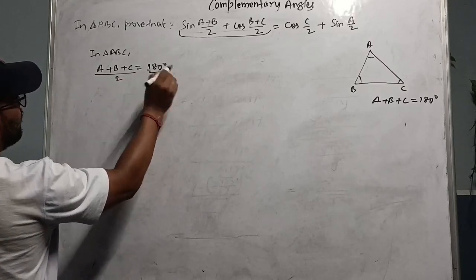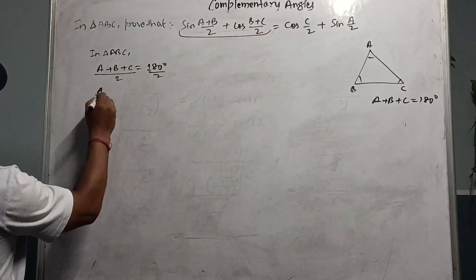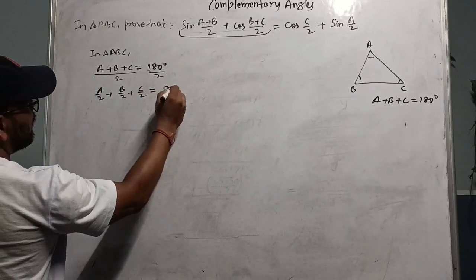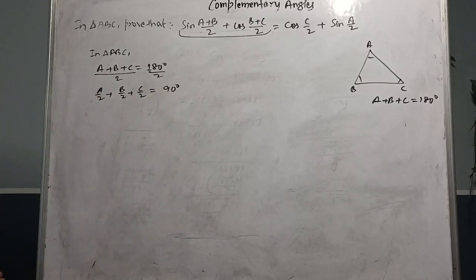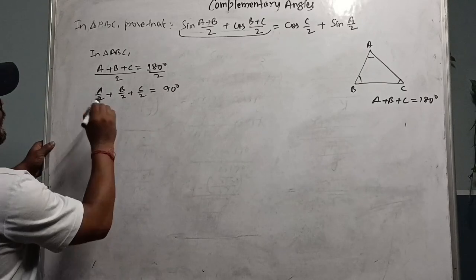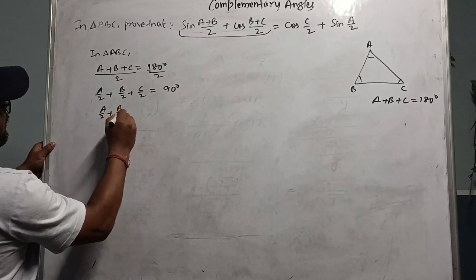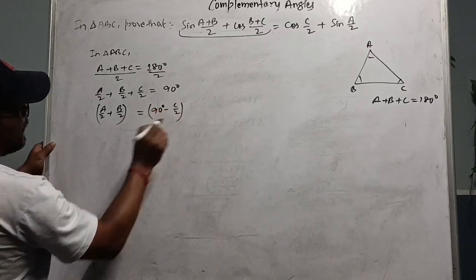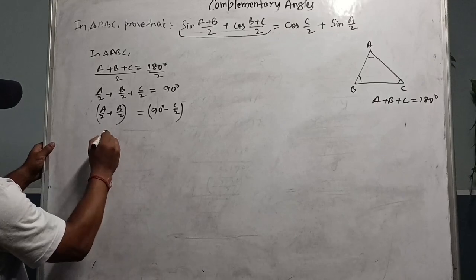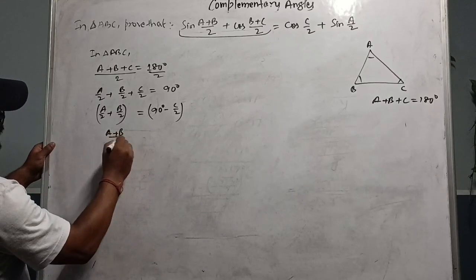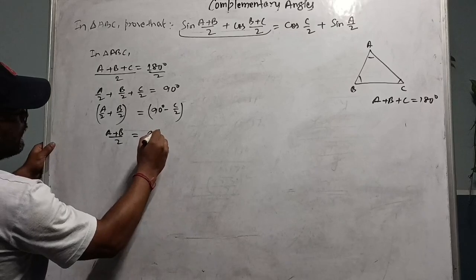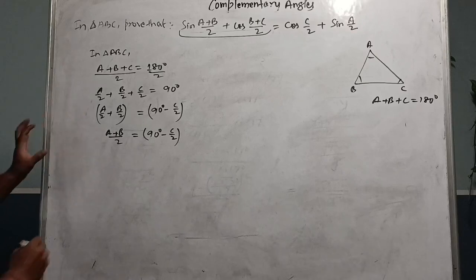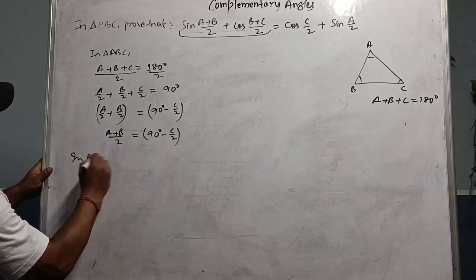Dividing both sides by 2: A/2 + B/2 + C/2 = 90°. Therefore A/2 + B/2 = 90° - C/2, which means (A+B)/2 = 90° - C/2. Similarly, (B+C)/2 = 90° - A/2. These are the key substitutions we will use.